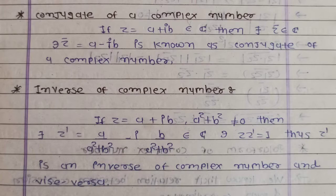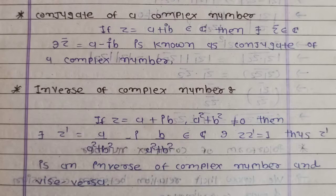Conjugate of a complex number: if z is equal to a plus ib belongs to C (the set of complex numbers), then there exists z bar belonging to C such that z bar is equal to a minus ib. This is known as the conjugate of the complex number. So for z equal to a plus ib, its conjugate z bar is equal to a minus ib.